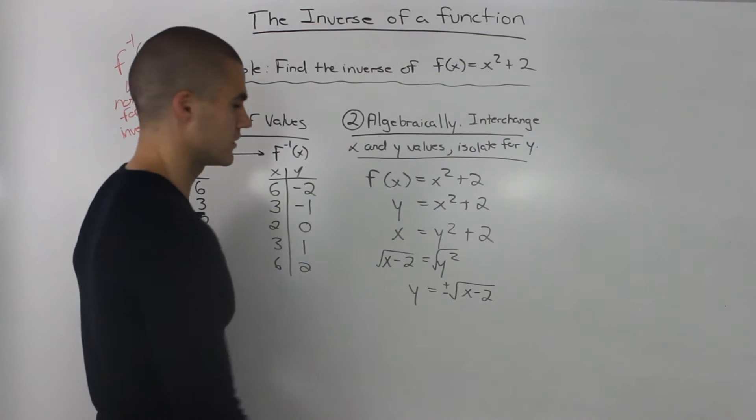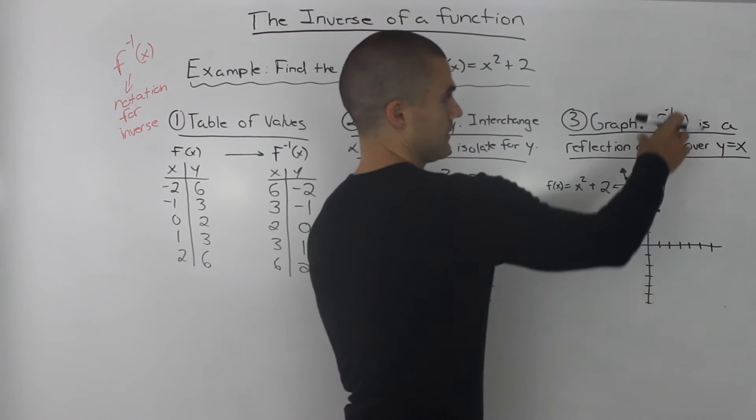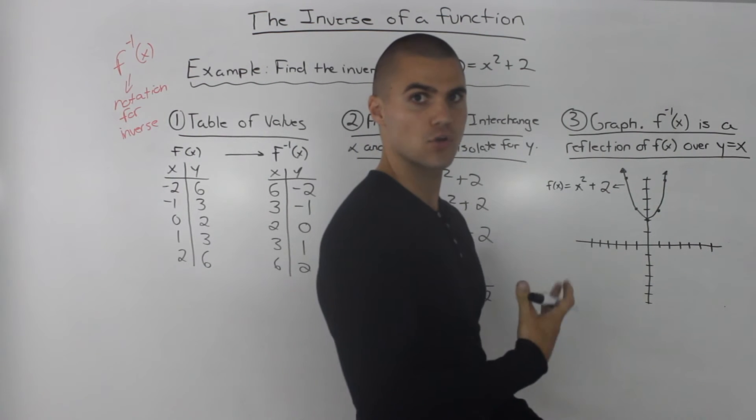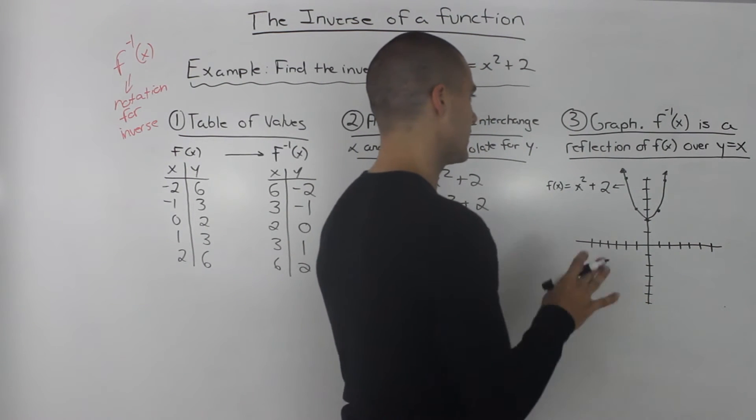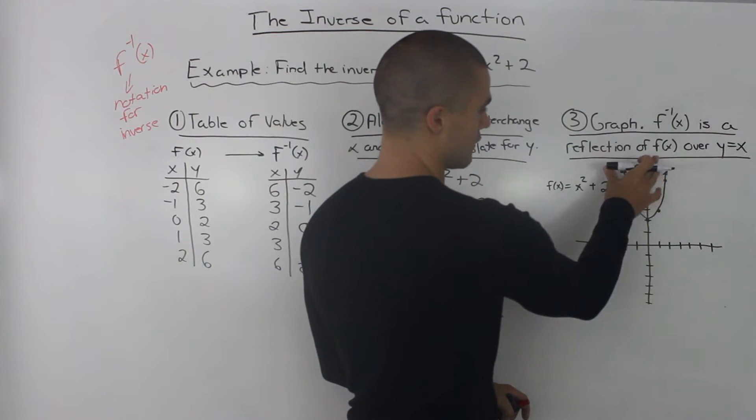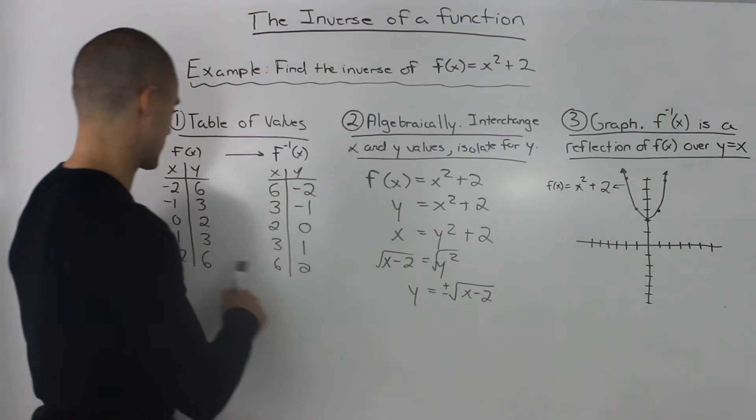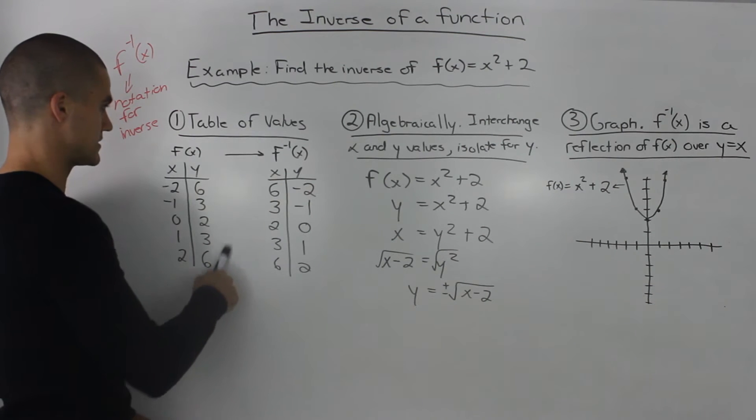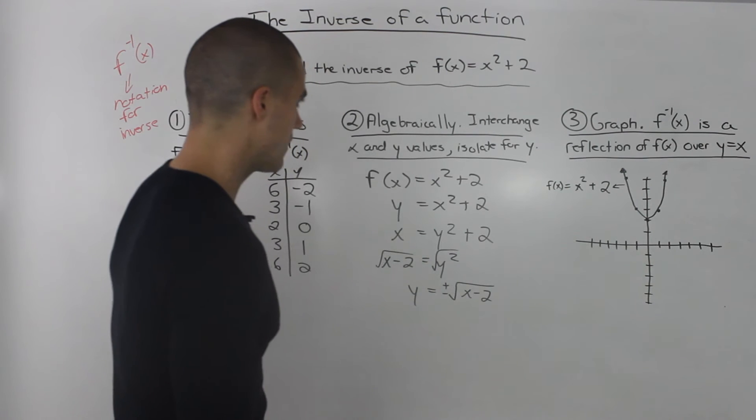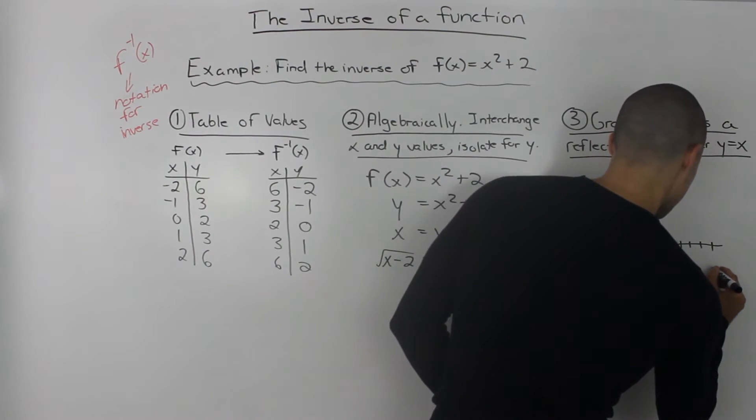If we were to take this relation here and make a table of values for it, we would get this same table here. Now the third way that we can go about this is by graphing it. And the inverse of a function is a reflection of f(x) over the line y = x. But for now all I did was I started off by graphing the function that we were given, x² + 2. So I took these points that we made in the table of values in step 1 and I just plotted them here.